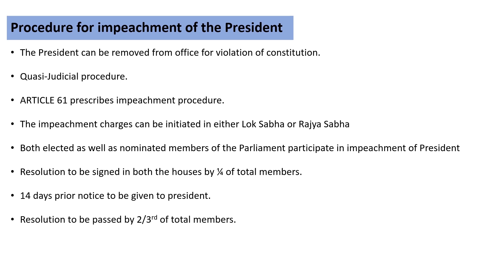The president's impeachment procedure is also part of the voting process. The president may be impeached for violation of the Constitution. This is a quasi-judicial procedure, explained under Article 61. The impeachment charges are initiated in either house of parliament, with elected members participating. The resolution requires at least one-fourth of total members to initiate. The president is given 14 days prior notice, and two-thirds of total members must pass the resolution in parliament.